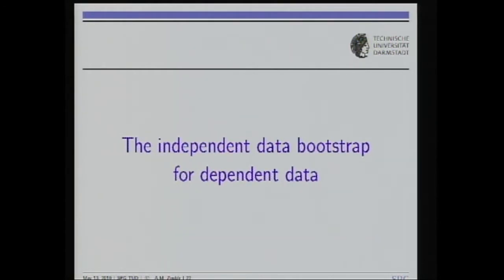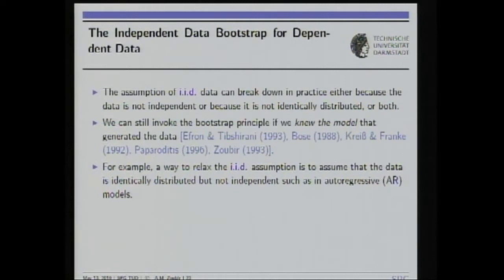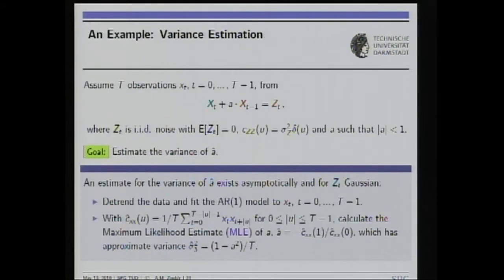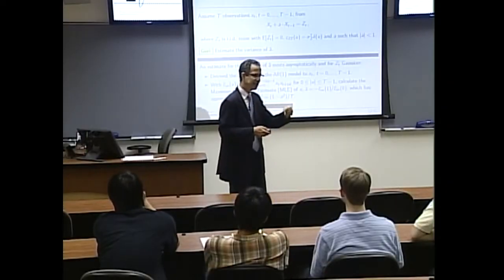In signal processing we deal with dependent data — we don't always have IID data. The question is how to proceed when data is dependent, since you cannot do resampling by drawing at random with replacement. The IID assumption can break down because data is not independent or is non-identically distributed. We could still invoke the bootstrap if we knew a model for the correlated data — for example, if data is well-represented by an autoregressive process, we could use the innovations of that process to do independent data resampling.